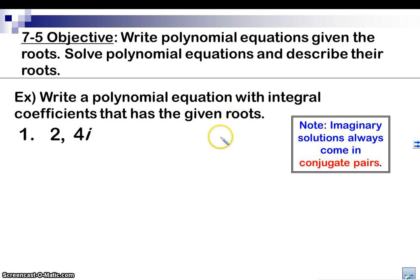So what I want to make sure that you realize is that when we're creating a polynomial equation given its roots, we have to know that the imaginary solutions always come in pairs. So if you have 4i, you also know that you have negative 4i. They have to come in pairs.